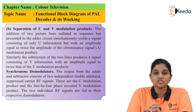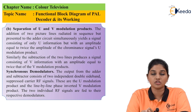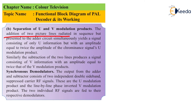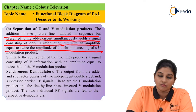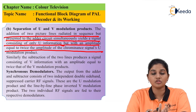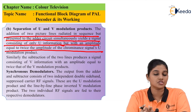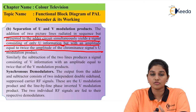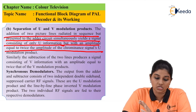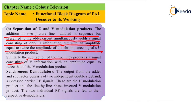The next stage is the separation of U and V modulating signals. Two picture lines radiated in sequence are presented to the adder circuit simultaneously, resulting in a signal consisting of only U information with an amplitude equal to twice the amplitude of the U-modulated chrominance signal. In the U signal path, addition takes place, whereas in the V signal path, subtraction takes place. The subtraction of two lines produces a signal consisting of V information, while the addition of two lines produces a signal consisting of U information.